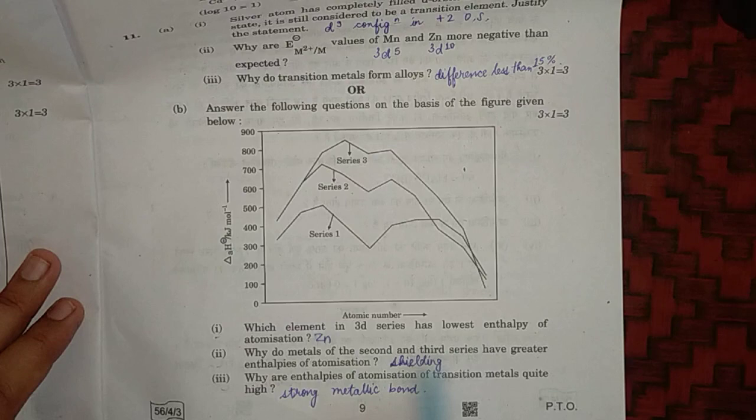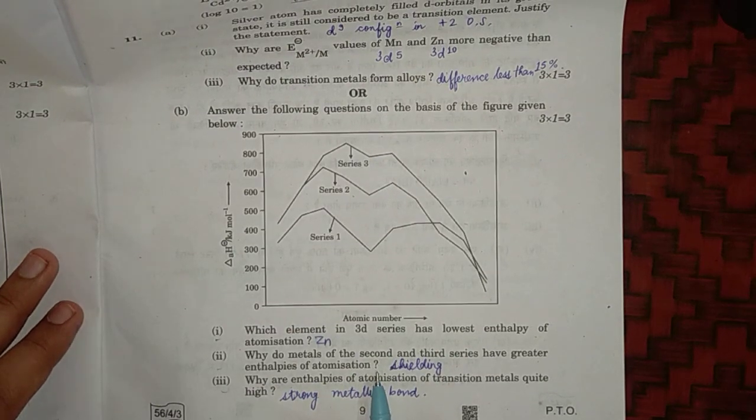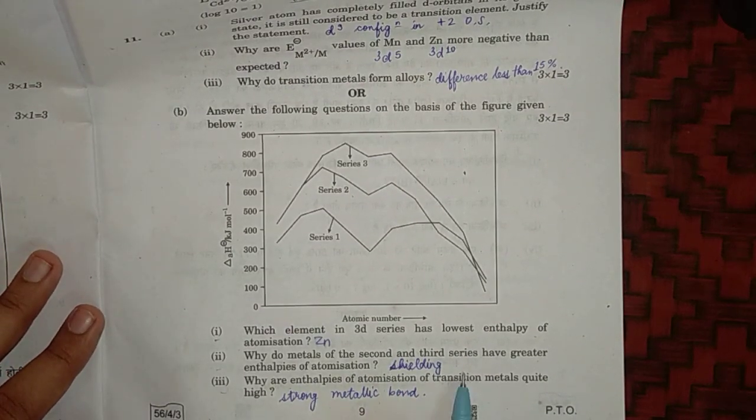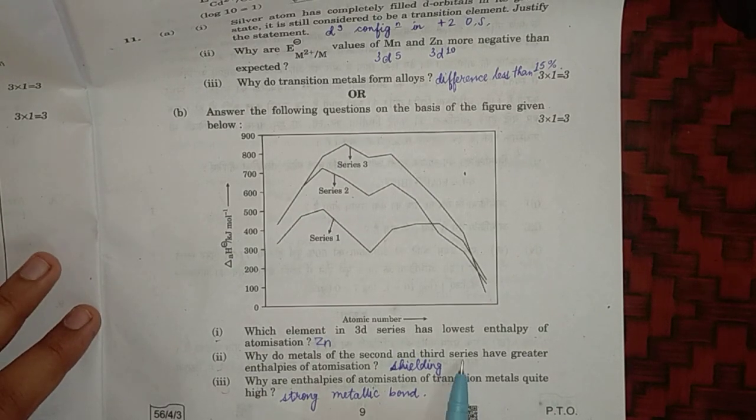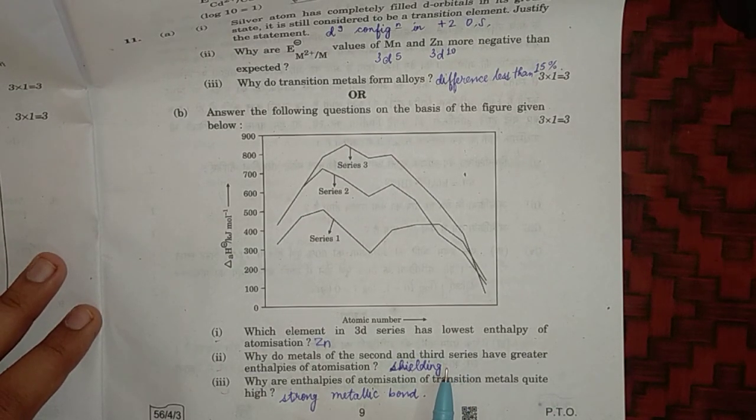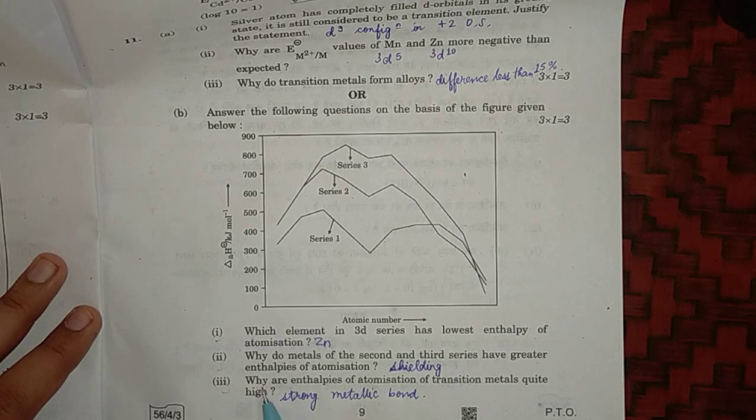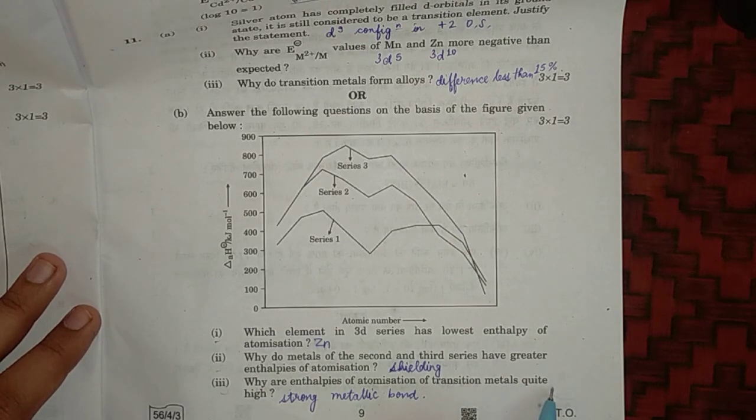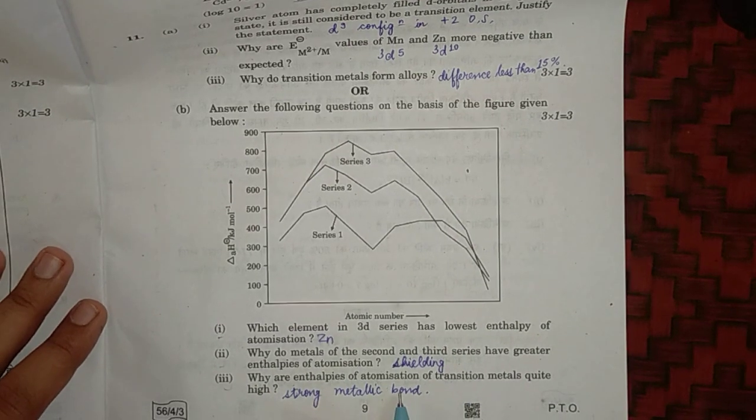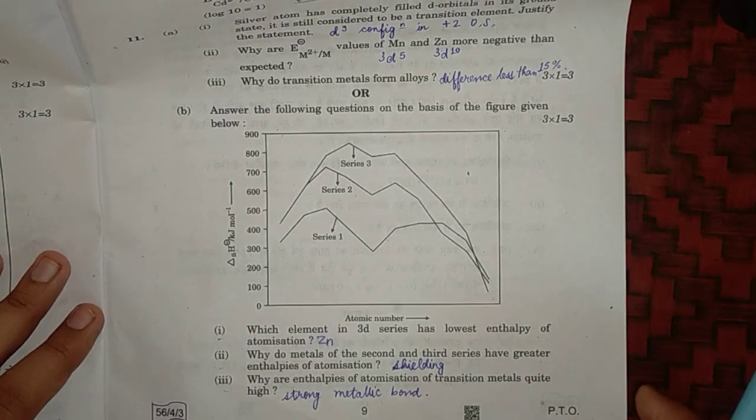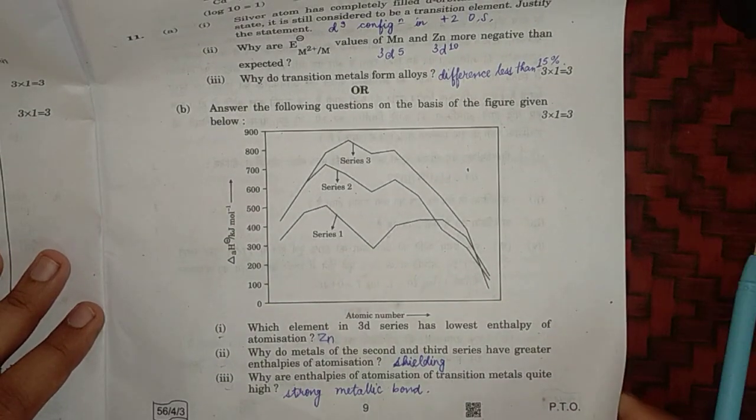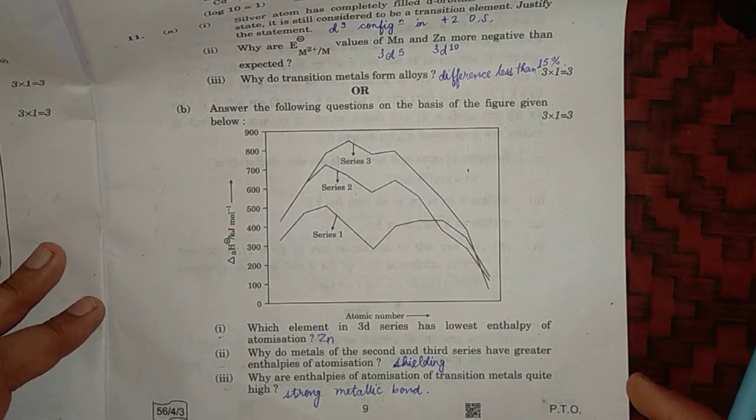And they can attract the valence electrons more easily. Why are enthalpy of atomization of transition metals quite high? Because they form strong metallic bonds due to more valence electrons, they have vacant d orbital, small size, and high ionization enthalpy.